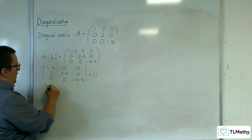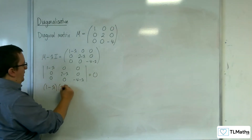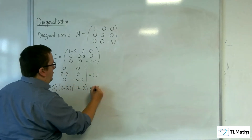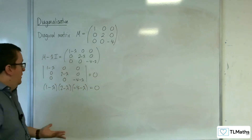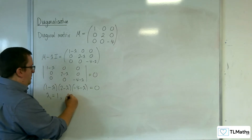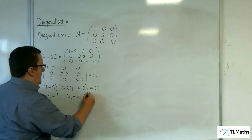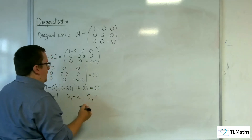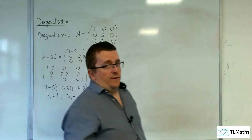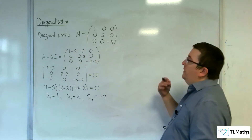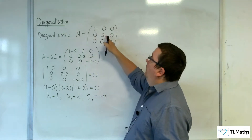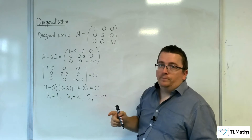The determinant of that matrix is just (1 - λ)(2 - λ)(-4 - λ) = 0. And it's already in factorised form, so it's very easy to see that λ₁ = 1, λ₂ = 2, and λ₃ = -4. So the eigenvalues of a diagonal matrix are precisely the elements in that leading diagonal.